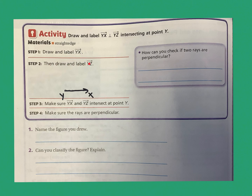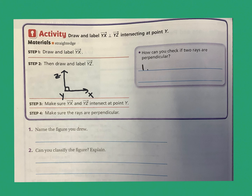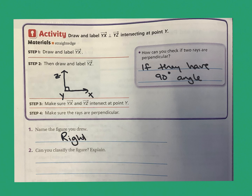Then I'll draw and label ray YZ, but it has to be perpendicular — so if I have ray YX going this way, I need to go up and down at a 90-degree angle for ray YZ. Make sure ray YX and ray YZ intersect at point Y. They are perpendicular — they make a 90-degree angle. You can check if two rays are perpendicular by confirming they form a 90-degree angle. The figure I drew is a right angle.